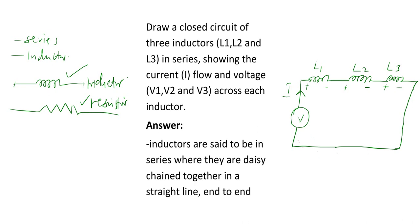And very important — for the voltages, the voltages are not the same across all three inductors in series. So we can show voltage V1 across L1 like that. For V2, we can show it separately like that. And for V3, we can show it like that. So that is how we show the voltages across the inductors.